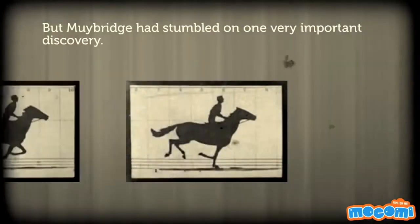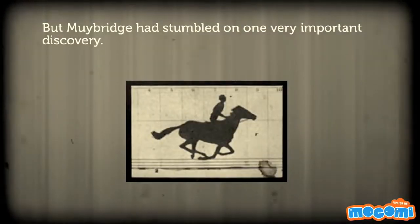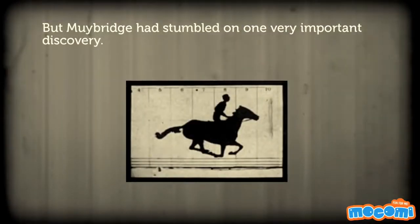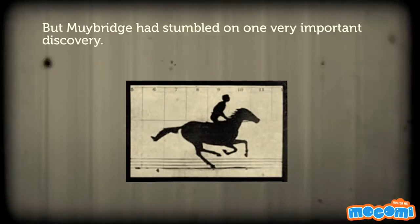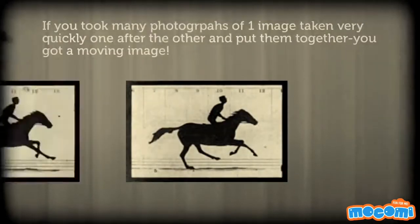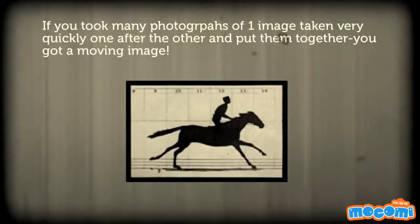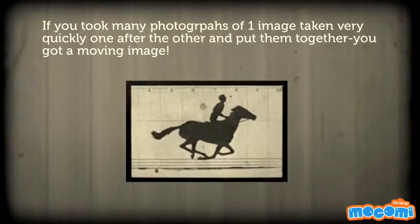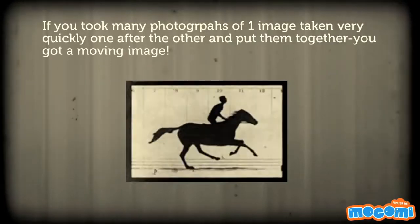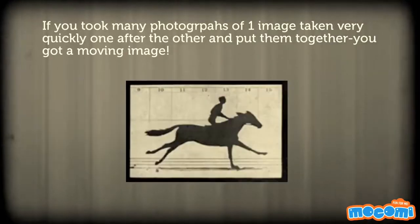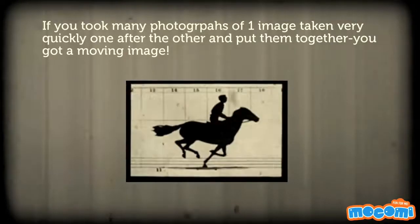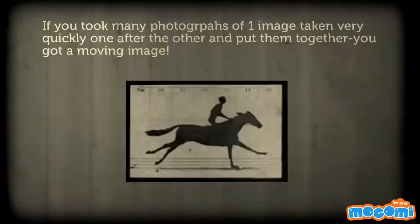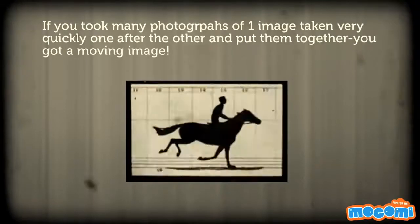But Muybridge had stumbled on one very important discovery. If you took many photographs of one image taken very quickly one after the other and put them together, you get a moving image.